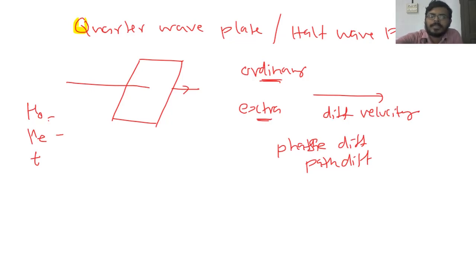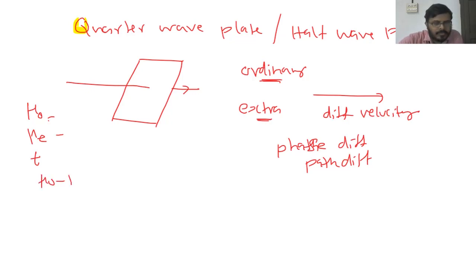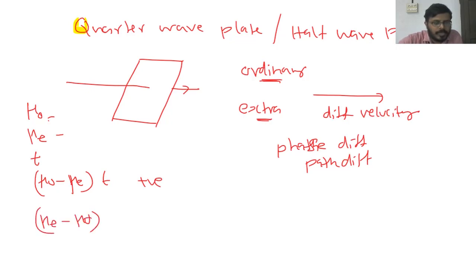The path difference will be equal to (μO − μE) × T for positive crystals, and (μE − μO) × T for negative crystals.